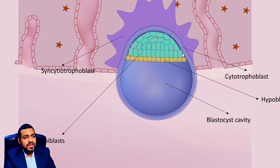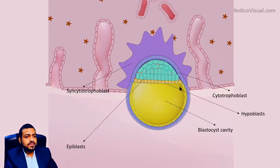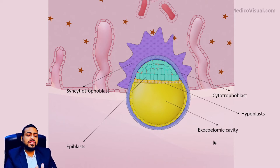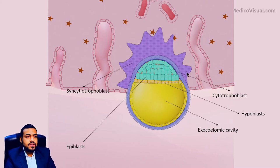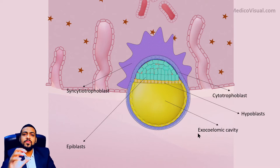Initially this blastocyst cavity was lined by cytotrophoblast, but now it will be lined by hypoblast-derived cells. As it is lined by hypoblast-derived cells, it is no longer named the blastocyst cavity but is now called the exocelomic cavity. Celome means body cavity — the real body cavity of the embryo will be inside the embryo proper, but this cavity is outside the body cavity of the embryo. That is why this cavity is called exo — exo means outside — the exocelomic cavity.